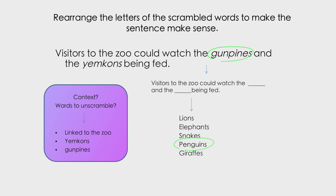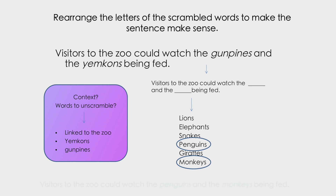Giraffes, monkeys — and then we can see that 'yemkons' is an anagram for monkeys. So our two answers are penguins and monkeys. Our sentence is: 'Visitors to the zoo could watch the penguins and the monkeys being fed.'